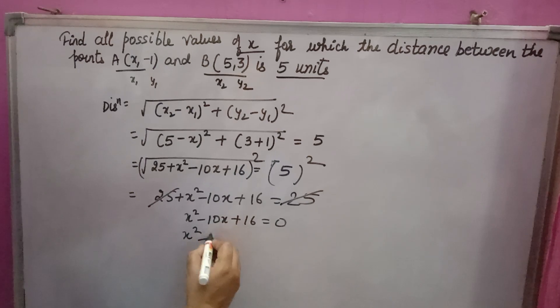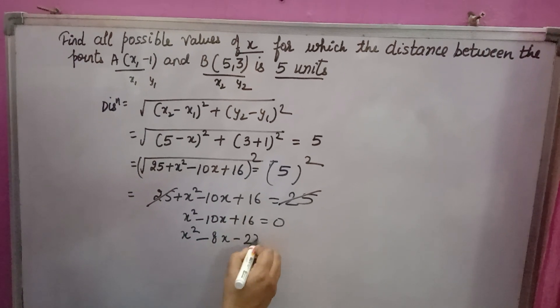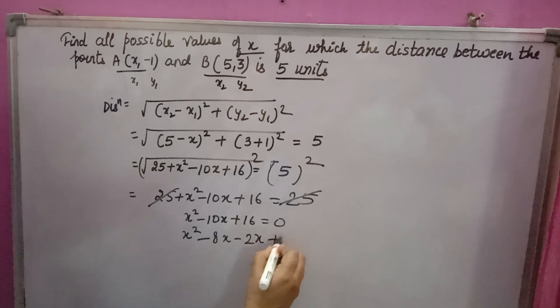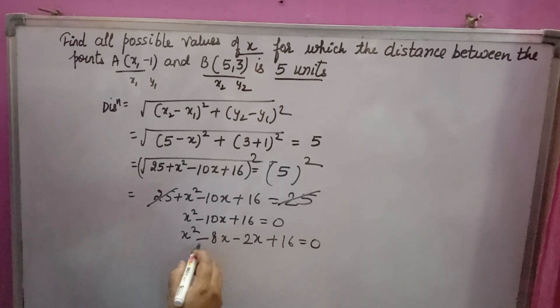8 into 2 is 16. So we get the quadratic: x squared minus 8x minus 2x plus 16 equal to 0.